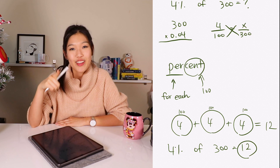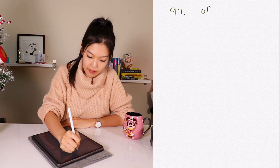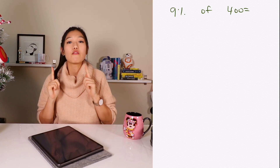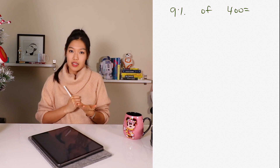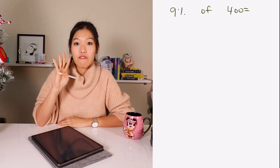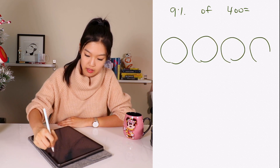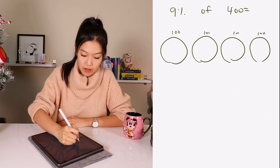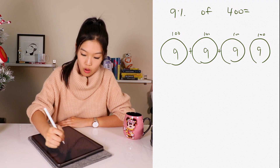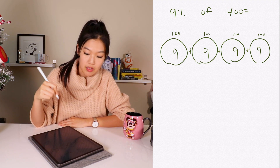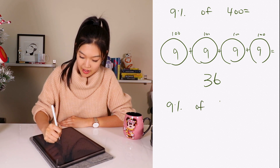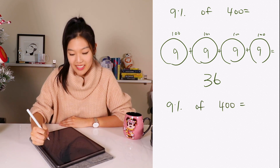Let's practice another question. What is nine percent of 400? Percent means for each 100. So I have nine in each 100. And I have four hundreds: 100 here, 100 here, 100 here, 100 here. I put nine in each of them — nine, nine, nine, and nine — and add them together. Nine plus nine plus nine plus nine is 36. So nine percent of 400 is 36.